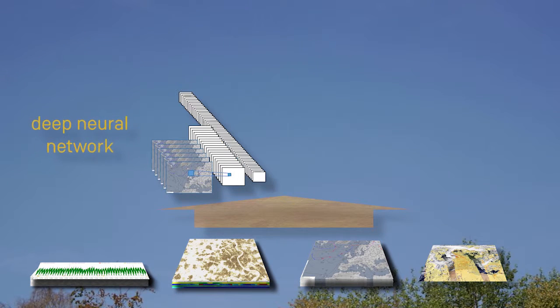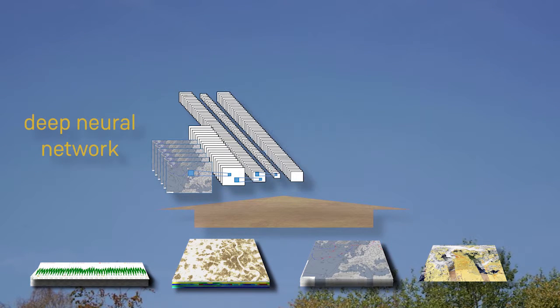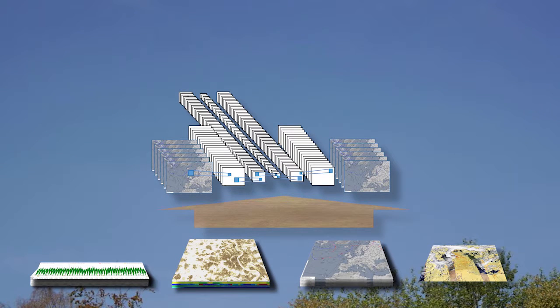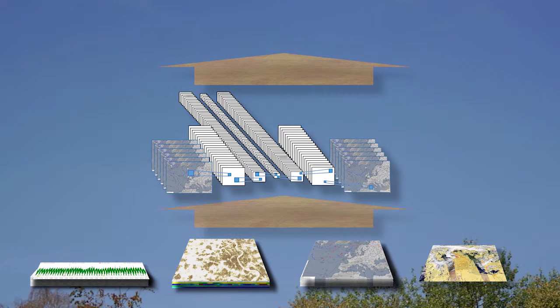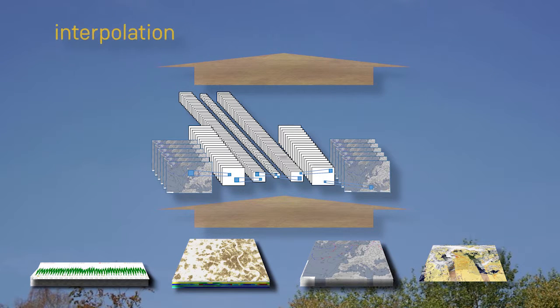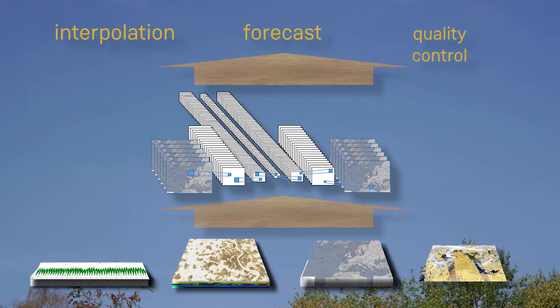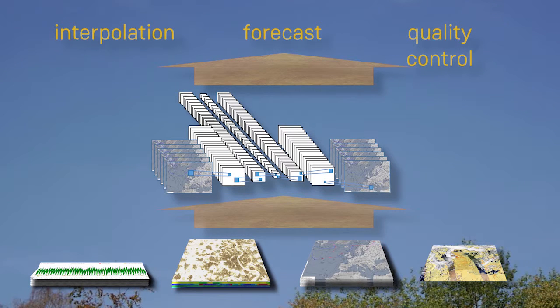IntelliAQ will be the first project to apply the full potential of deep neural networks on global air quality data. State-of-the-art deep learning methods will be applied to this unprecedented data set in order to fill observation gaps in space and time, provide short-term forecasts of air quality, and assess the quality of air pollutant information from diverse measurements.